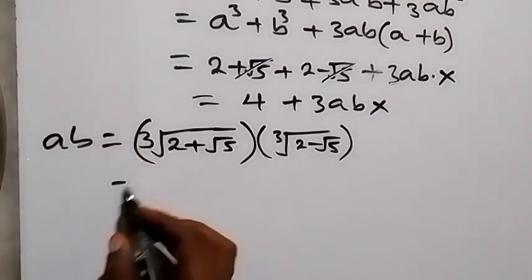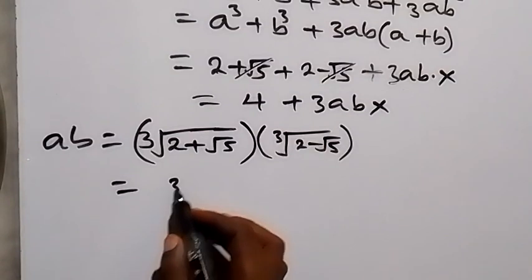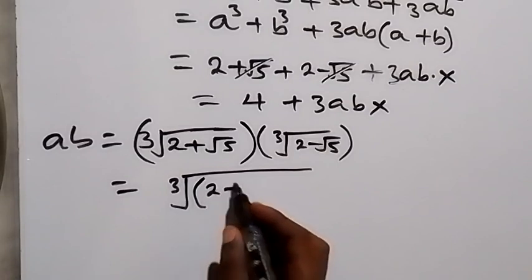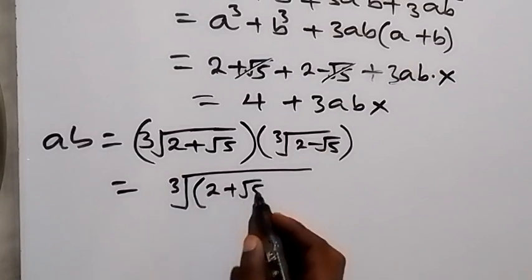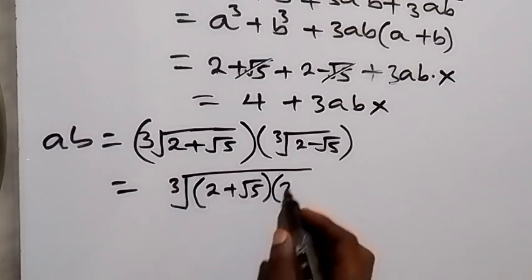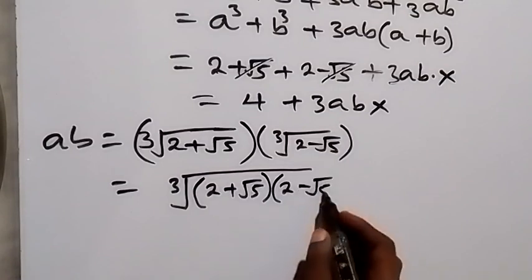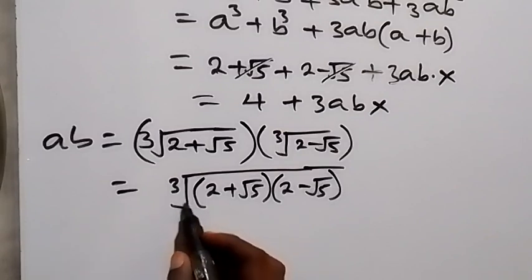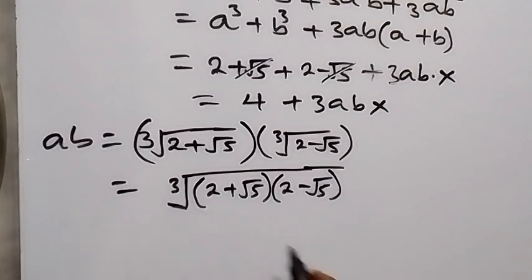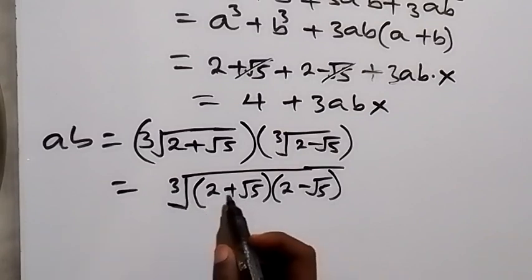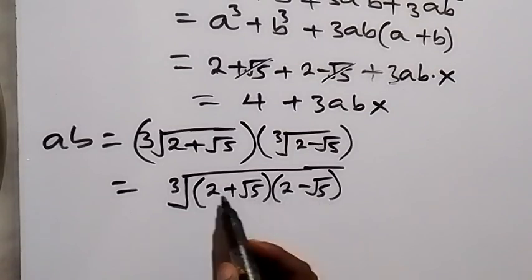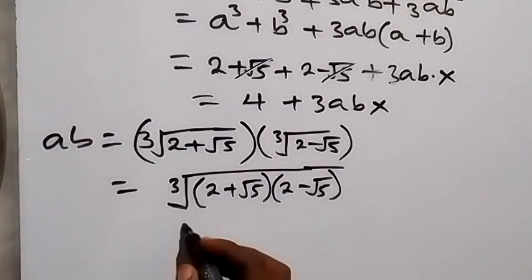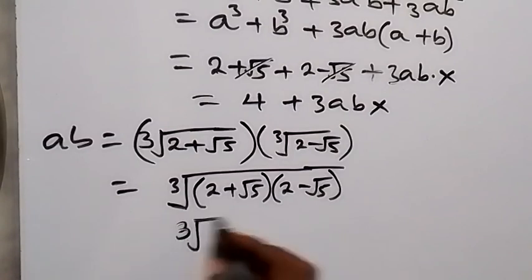Since both factors are cube roots, we can bring them under a single cube root: ab equals the cube root of (2 + √5)(2 − √5). These two are conjugates, so expanding by the difference of two squares gives 2² − (√5)².